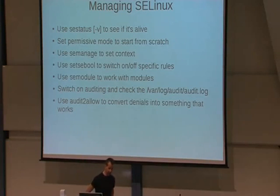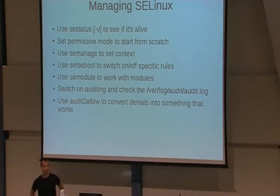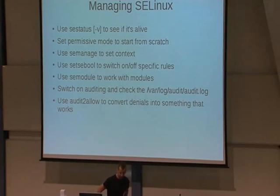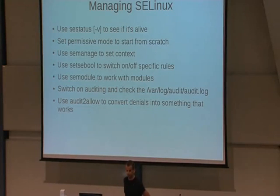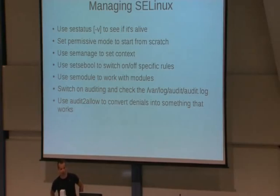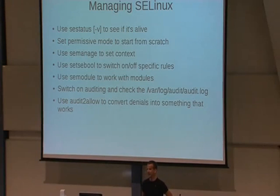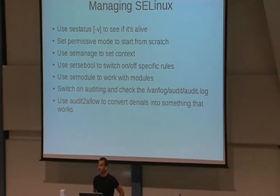Managing SELinux: first, check if it's active — `sestatus` will show if your system is using SELinux. This is especially important when trying to enable SELinux on a distribution that doesn't support it by default. Use permissive mode to start from scratch. Permissive mode is where SELinux is fully operational but doesn't block anything, so you can analyze what's happening while still having functionality on your system.